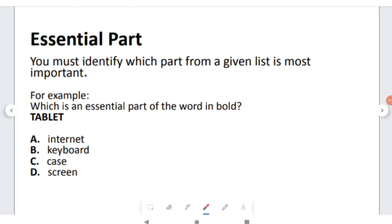For essential part type questions, you must identify which part from a given list is most important. For example, which is an essential part of the word in bold? The word in bold this time is tablet. You would have to ask yourself, which of the options does a tablet can't do without? Can a tablet work without the internet? Yes, it can. Can a tablet work without a keyboard? Yes, it can. Do you have to have a case on a tablet to use it? No. Can a tablet do without a screen? No, a tablet can't work without a screen. It would defeat the purpose of having a tablet. So, the option here would be Screen.